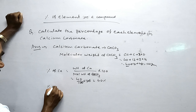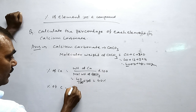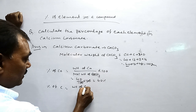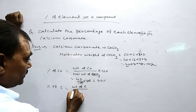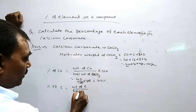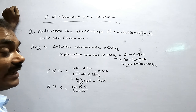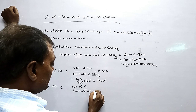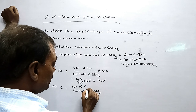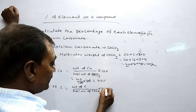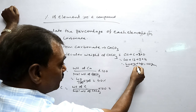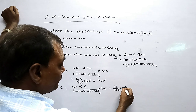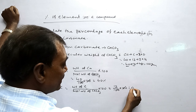Percentage of carbon: weight of carbon by molecular weight of this compound — molecular weight of calcium carbonate — into 100. Weight of carbon is 12 grams. So 12 by 100 into 100 gives us 12 percent.